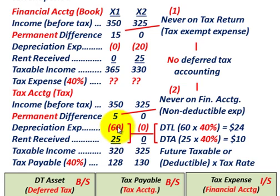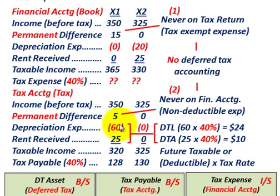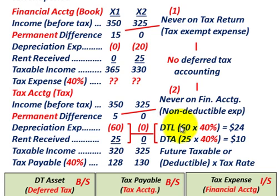We also have a deferred tax liability, where we're taking extra depreciation expense for tax accounting purposes over book accounting — $60,000 in year X1. That would be a deferred tax liability; we get to take it in the first year but can't deduct it in future years. This extra depreciation of $60,000 is going to reverse out in year X2, recorded at $20,000 per year for the next three years. The total deferred tax liability is $60,000 times the 40% tax rate, which is $24,000.